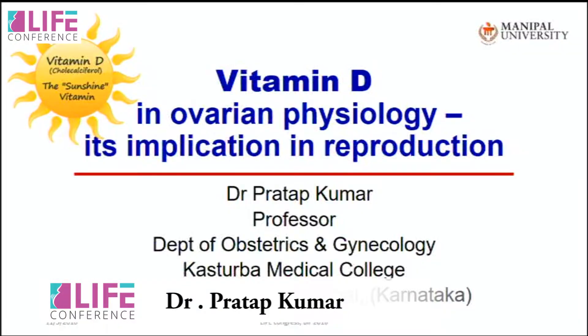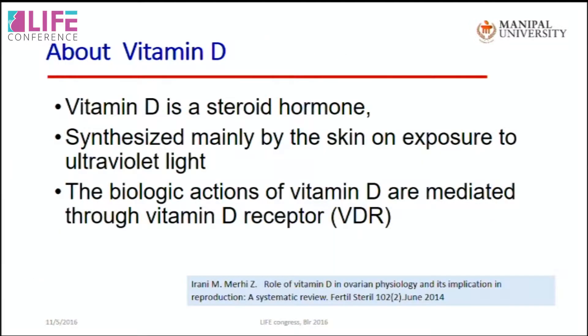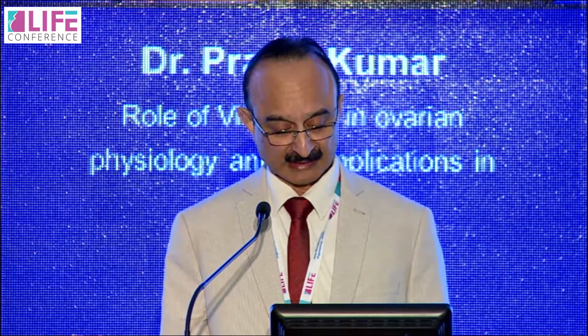What is the role of vitamin D in ovarian physiology and its implication in reproduction? I bring greetings from Manipal University. Now we know that vitamin D is a steroid hormone, synthesized mainly by the skin on exposure to ultraviolet light. The biological activity of vitamin D is mediated through a receptor called the vitamin D receptor, or VDR.